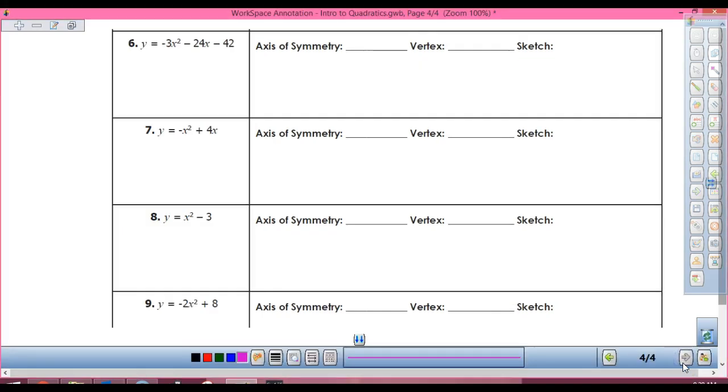The only other thing that I want to show you is number 8. Look at number 8. What's my A? My A is 1. My B is 0. Remember your B is what's hooked on to your x. What's my C? Negative 3. If you look at 7, it's the opposite. Look at 7. What's A? Negative 1. What's B? 4. And what's C? 0. So, be careful when you're missing some terms.